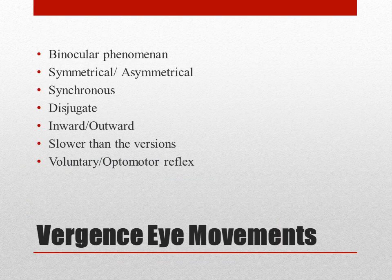Now these are some of the basic points to remember in vergence. Vergence is a binocular phenomenon. Only thing is, in versions the two eyes are moving together in the same direction which is a conjugate movement, but in vergence the eyes are moving in a synchronous manner together but in the opposite direction, which is called the disjugate movement. This vergence movement takes place in order to align the visual axis with the fixation target so that the image of the target falls on the corresponding retinal points and therefore sensory fusion can take place and we can appreciate a single image of that object. Now this vergence can be inward or outward.